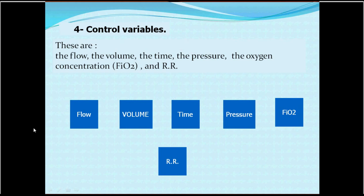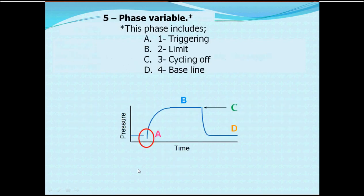The fourth component is control variables. Control variables refer to the physical characteristics of the delivered breath. Delivered air has a volume, a flow, and is delivered in a certain time, developed by certain pressures, with a certain FiO2 composition. All these data are repeated at a certain frequency per minute — the respiratory rate. So when we talk about control variables, we mean the physical characters of the breath: volume, flow rate, time, pressure, composition, and respiratory rate.